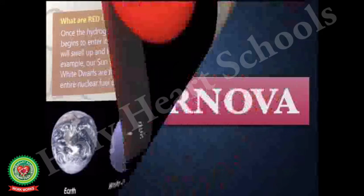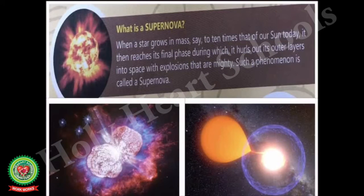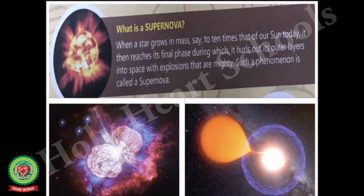Next we'll talk about supernova. A supernova is a powerful and luminous stellar explosion. A supernova happens when there is a change in the core or center of a star. The change can occur in two ways. The first type of supernova happens in binary star systems — binary stars are two stars that orbit the same point. One of the stars, suppose it to be a white dwarf, steals matter from its companion star. Eventually the white dwarf accumulates too much matter, causing the star to explode, resulting in a supernova.